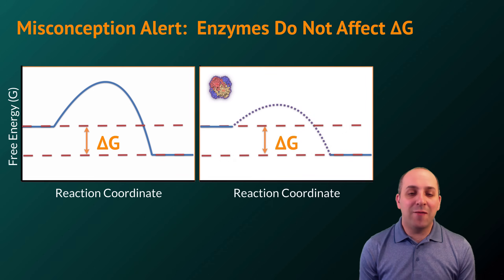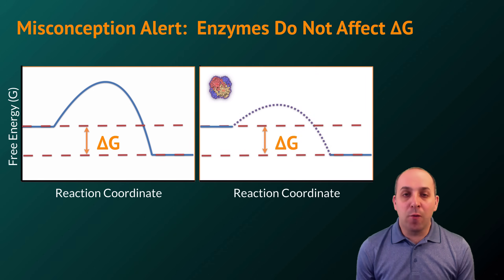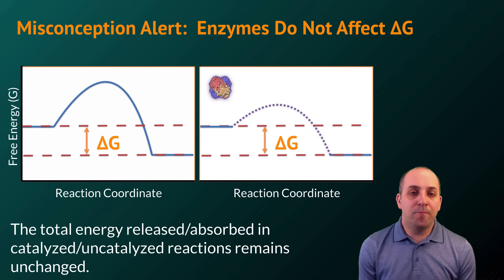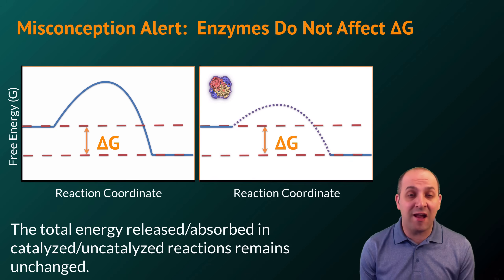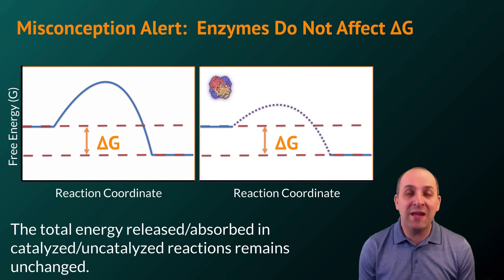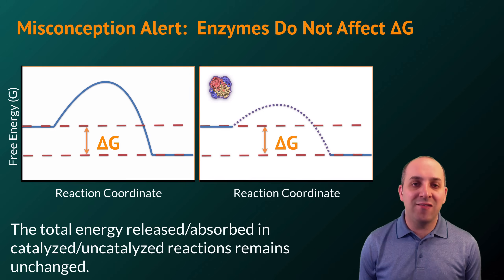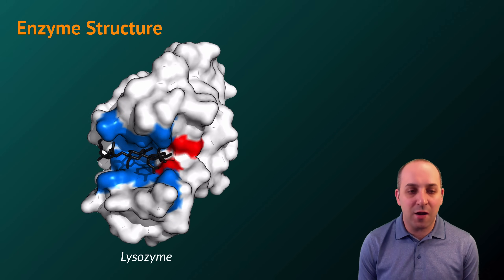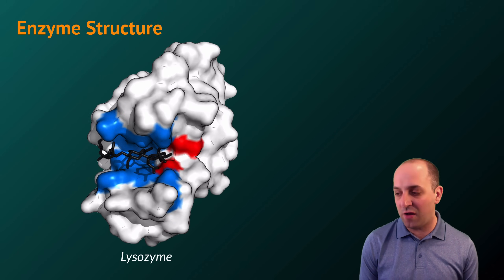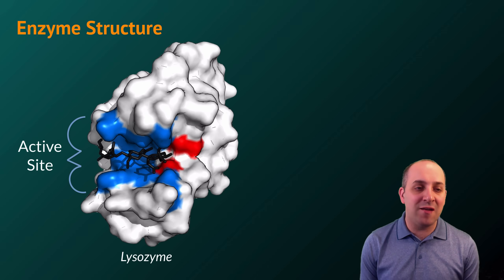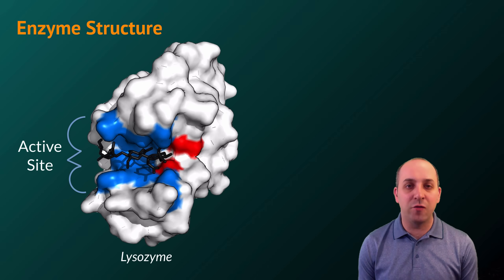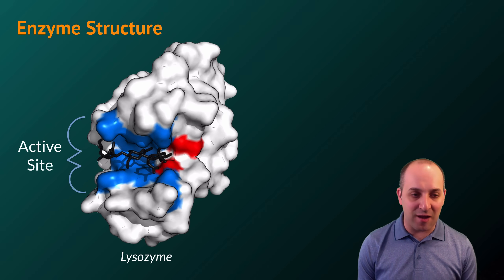It's important to understand that enzymes do not affect delta G in the reaction. The overall energetics of the reaction remain unchanged by the enzyme. The enzyme-catalyzed version of the reaction will either absorb or release as much energy as the uncatalyzed version. The presence of the enzyme only increases the rate of the reaction. Now let's figure out how enzymes work by looking at enzyme structure. The region of the enzyme actually involved in catalyzing the reaction is referred to as the active site.